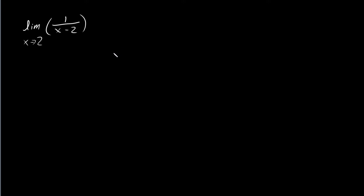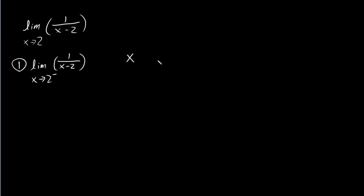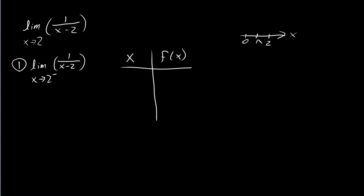Remember, there are three things that we have to find. We have to find the value of this function as x approaches 2 from the left, from the right, and check if those two things are equal. For the left-hand limit, I'd recommend making a table with x values and function values. We're approaching 2 from the left, so we use values like 0, 1, 1.5, 1.9, 1.99, 1.999 — these get closer and closer to 2 but are all less than 2.